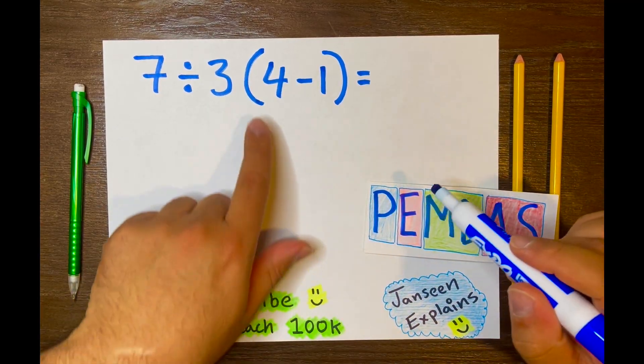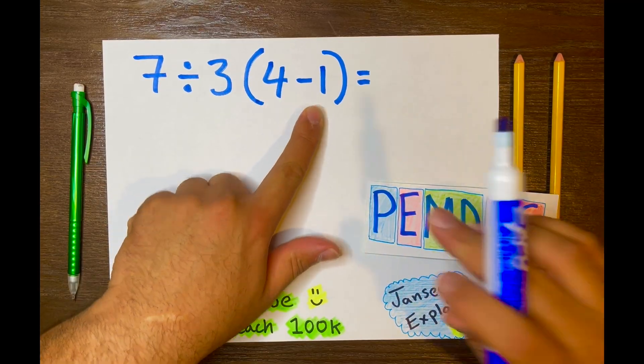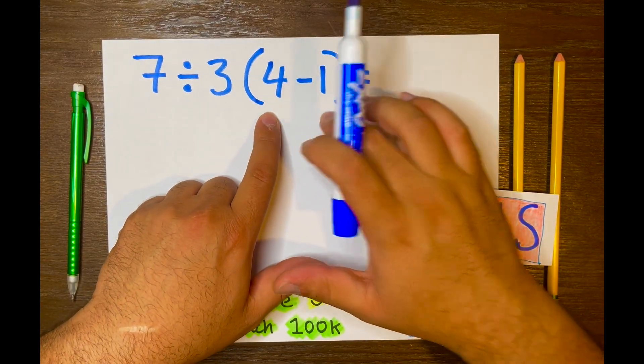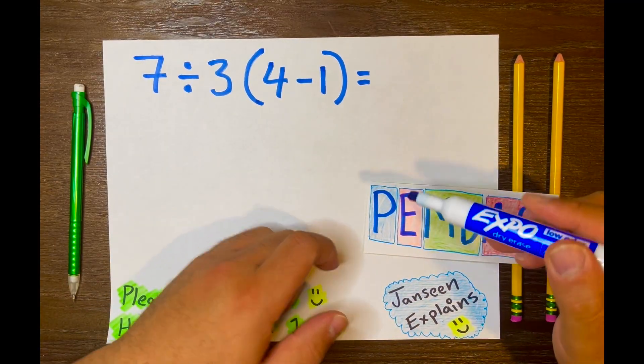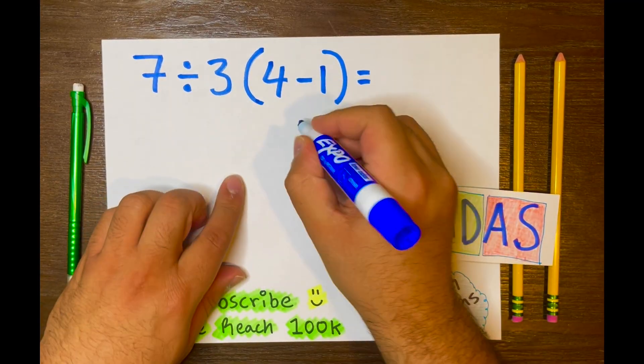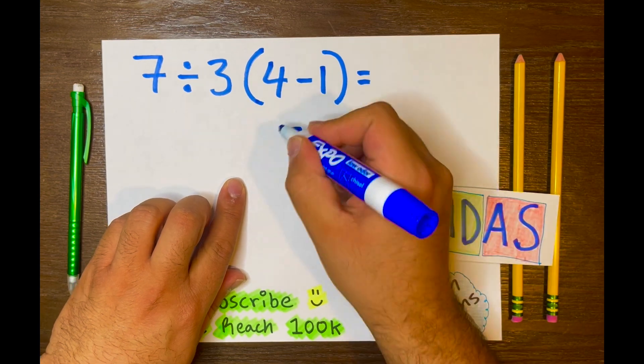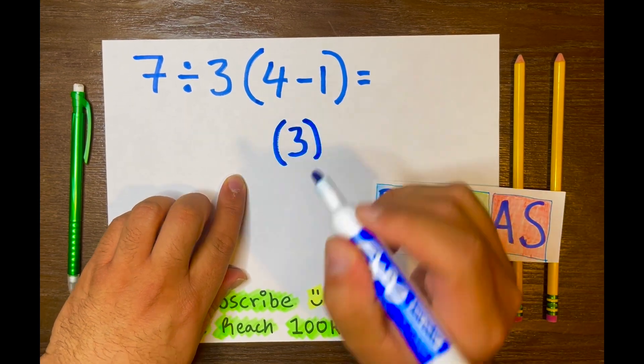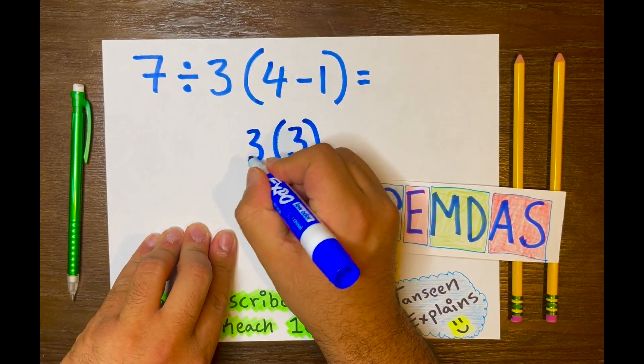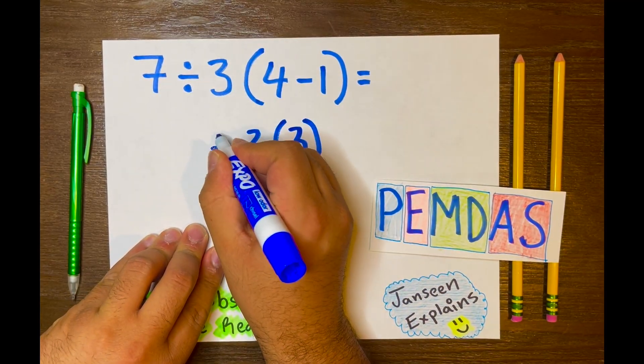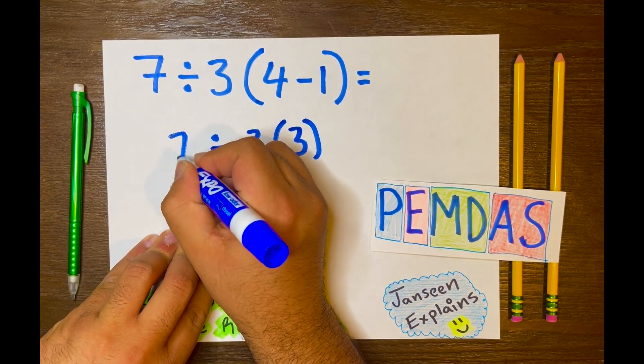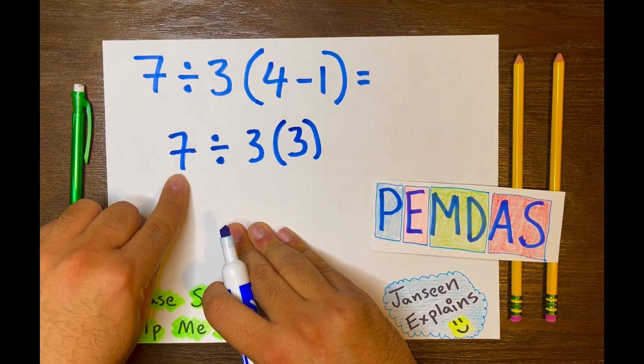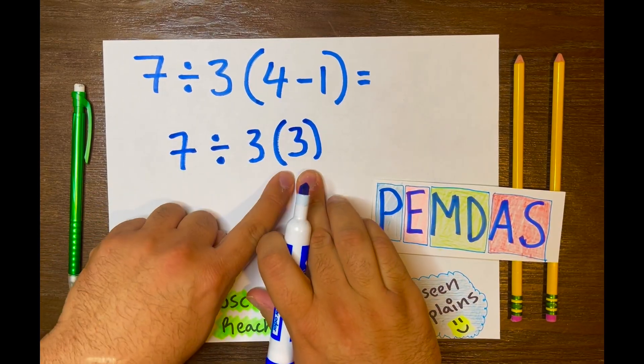Now again we start with 4 minus 1 because it's inside these parentheses and parentheses goes first. So 4 minus 1 is 3. Let's keep the parentheses and let's bring down the 3, the division symbol, and the 7 down. Now we have 7 divided by 3 times 3.